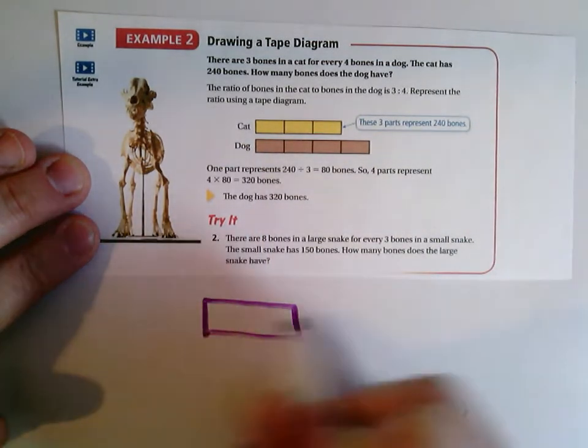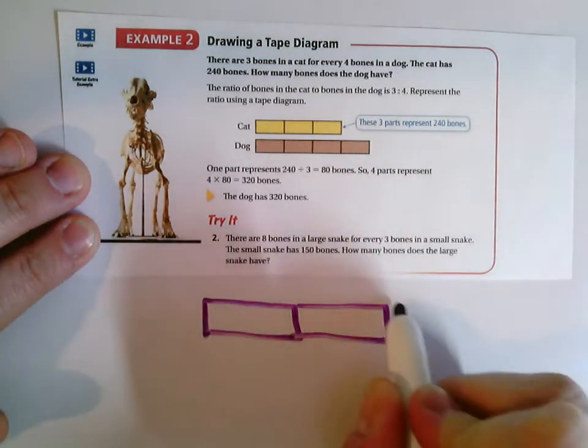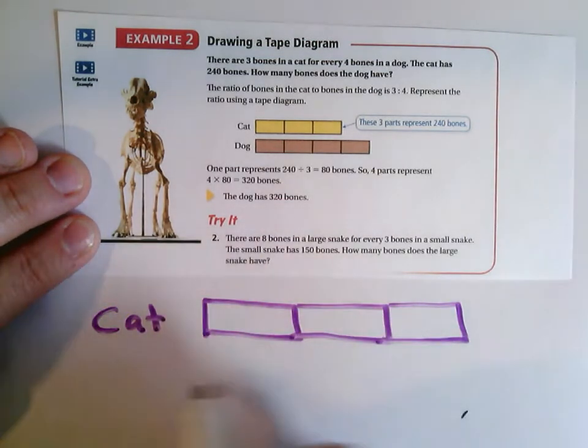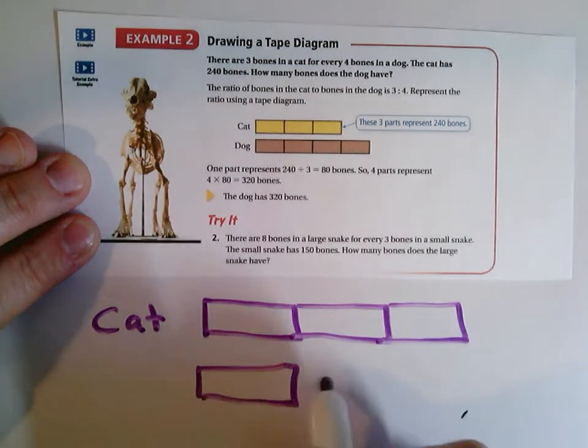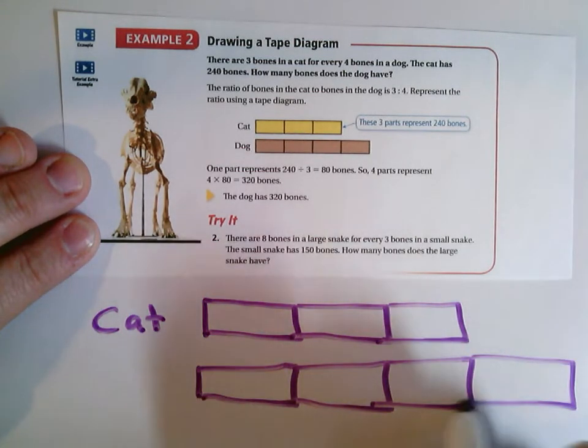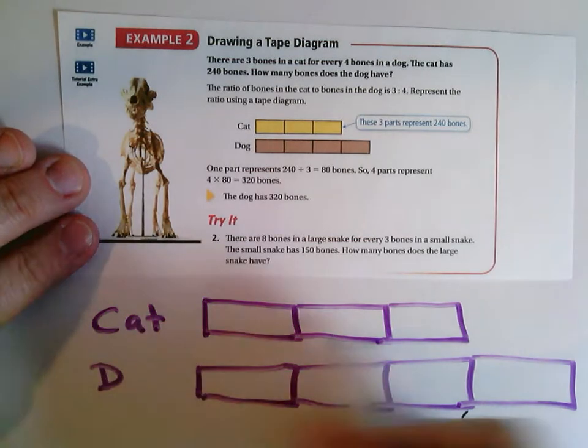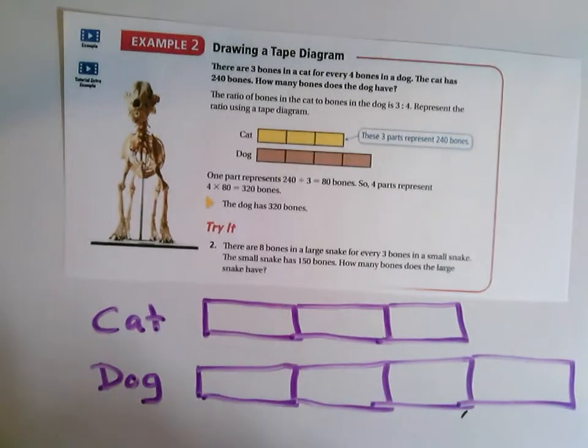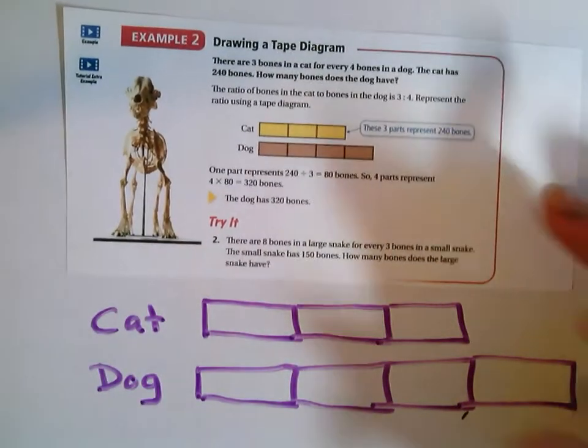So the cat, the ratio was three to four. Okay, the cat has three bones for every four that the dog has. So the cat, I made three pieces of tape. And for the dog, I made four pieces of tape.